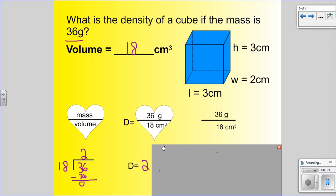We still have to put the unit of measurement. If we go back to our heart, that's where we can find our unit of measurement. It's grams per centimeters cubed.